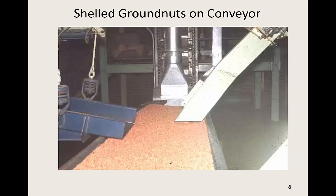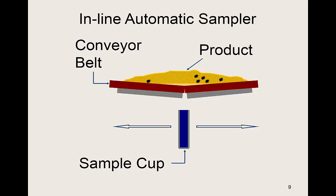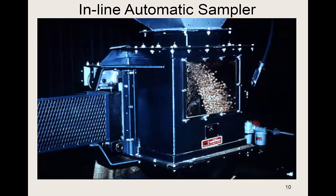Here's an example of shelled ground nuts on a conveyor. When the ground nuts leave the conveyor, that's a good point at which an increment can be taken. Here's a diagram of an inline automatic sampler — we have a conveyor belt with product on the belt. As you can see, kernels contaminated with mycotoxins may not be homogeneously dispersed. Therefore, it's wise to cut the entire stream when you take an incremental sample. This is a photograph of a commercially available inline automatic sampler that cuts the entire stream.